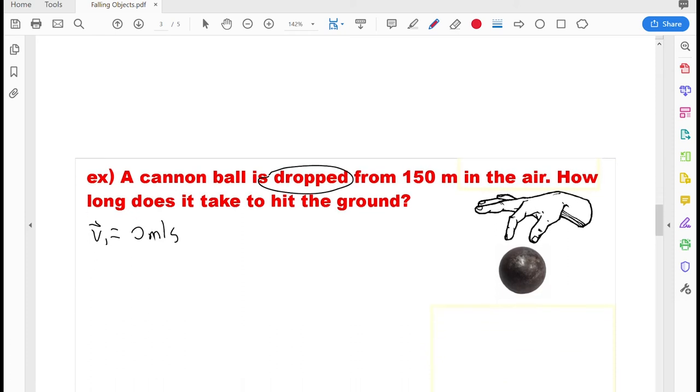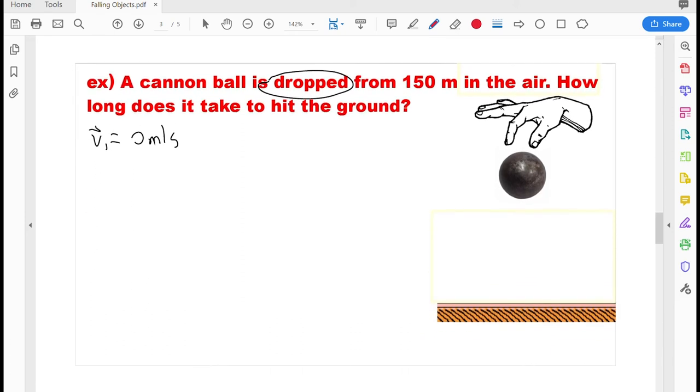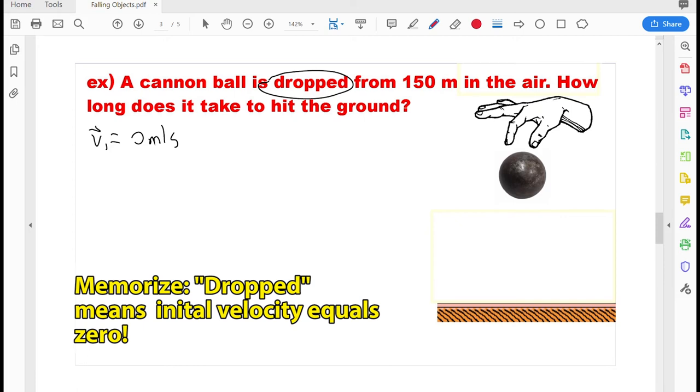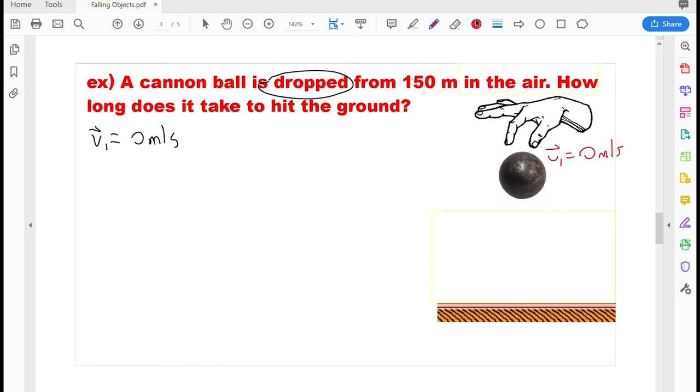Alright, so here's another one we're going to try out. It's another object that's being dropped. So I've already written in here that that means the initial velocity is 0 meters per second. Remember, any time an object is dropped, it means it starts off from rest at 0 meters per second. And then it gives us how far up in the air it started. So that means the displacement here is going to be, again, negative 150 meters. Why negative? Because that cannonball is going to fall downwards through 150 meters. This is a really long drop for this cannonball.